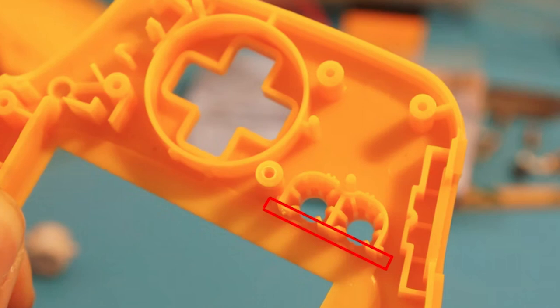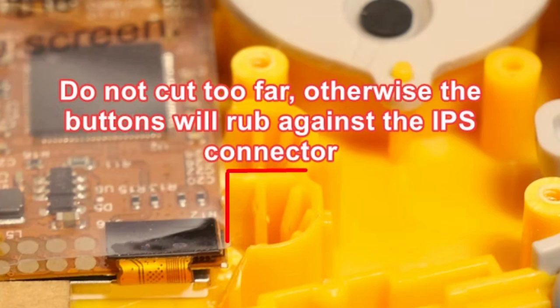Even with shells that are pre-cut for display mods, such as the ones we sell on our website, we recommend carefully examining and trimming the start and select areas. Trim about one millimeter of material to allow for additional clearance as shown. Be careful not to cut too far, otherwise the start and select buttons may rub up against the FPC connector.